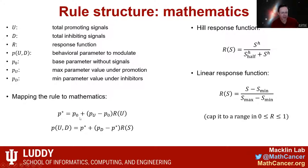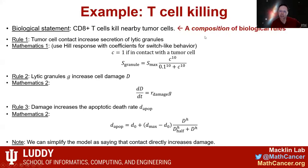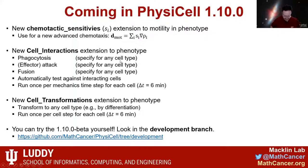Many of these statements have very typical forms: signaling factor X increases cell birth in cell type Y, or contact with some cell type would increase death in infected cells. We're building a rule structure where, for some cell type, some signal like extracellular matrix chemical concentrations or a gradient would increase or decrease some behavior, with an associated parameter value and some fine-tuning like a half-max or maximum response. We can map that rule directly into mathematics with a standardized form using Hill response functions. For example, the biological hypothesis 'interferon gamma promotes cell cycling' becomes the rule 'interferon gamma signal increases cell cycle entry,' mapped into a mathematical form for varying the rate of cell cycle entry. T-cell killing is actually a composition of three rules: tumor cell contact increases secretion of lytic granules; lytic granules increase cell damage; and damage increases apoptotic death.